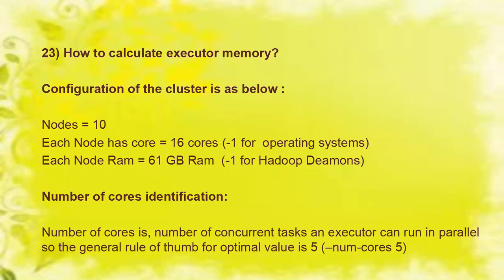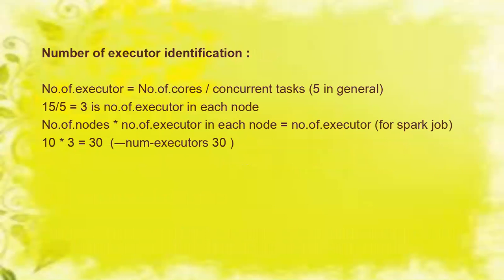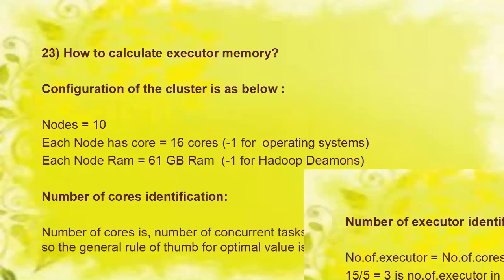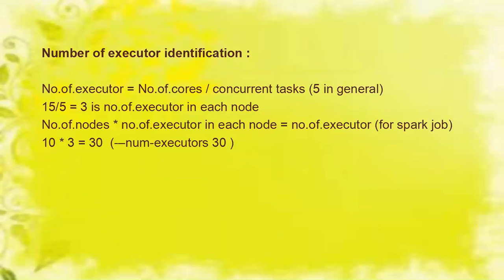Now we calculate the number of cores and executor memory. The number of cores refers to the number of concurrent tasks an executor can run in parallel. The general rule of thumb for the optimal value is 5 — so the number of cores per executor should be 5, which gives the best job performance.